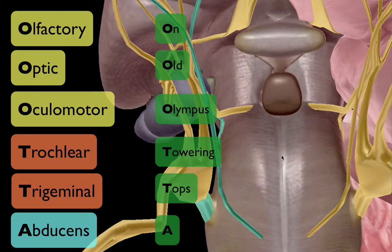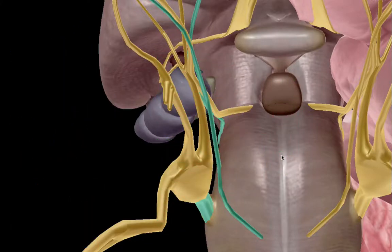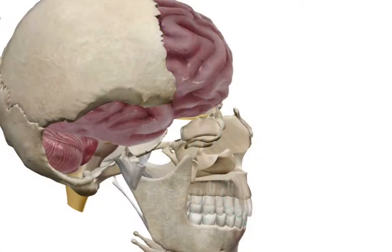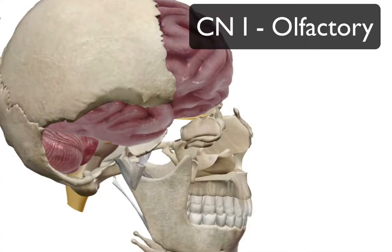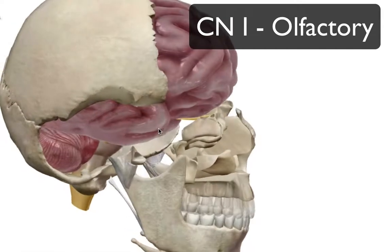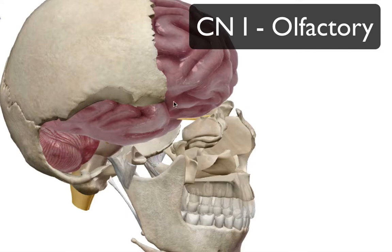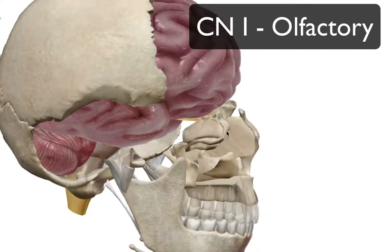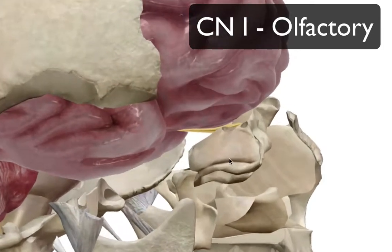Now let's spend the rest of the video highlighting each of these cranial nerves — their locations and functions. Kicking it off: cranial nerve number one, the olfactory nerve. We're looking at a side view of the head. You can make out the brain, parietal bone, and occipital bone, and the nose would be located right here — we're going to zoom in.